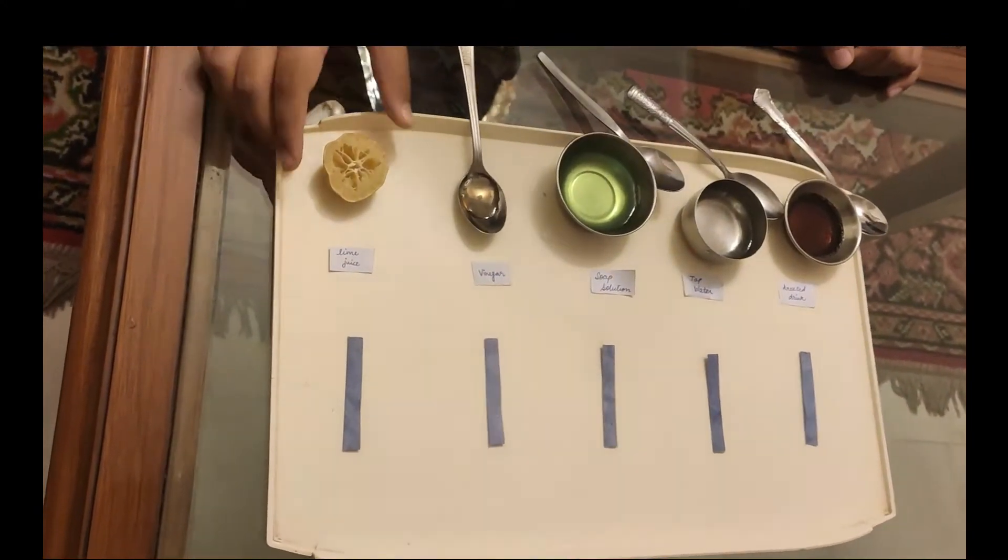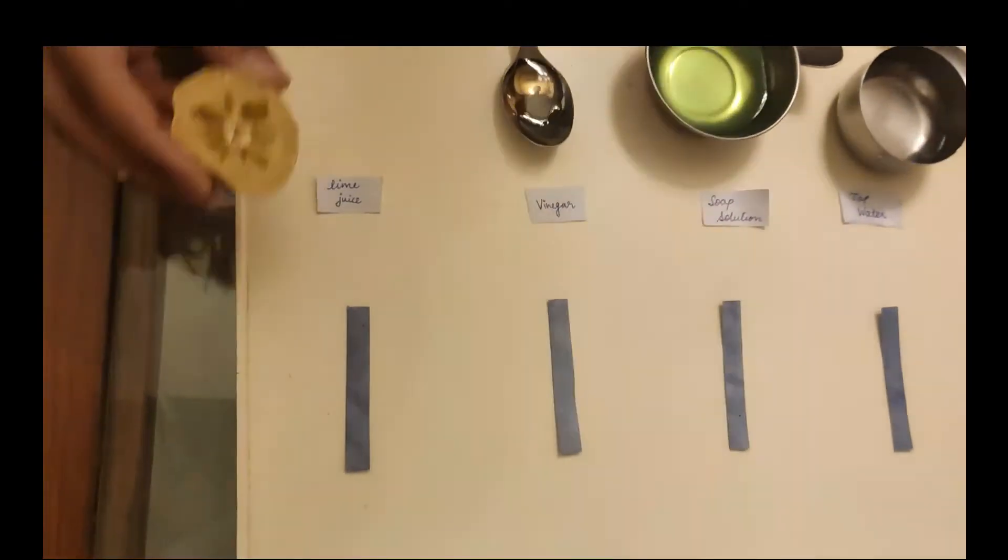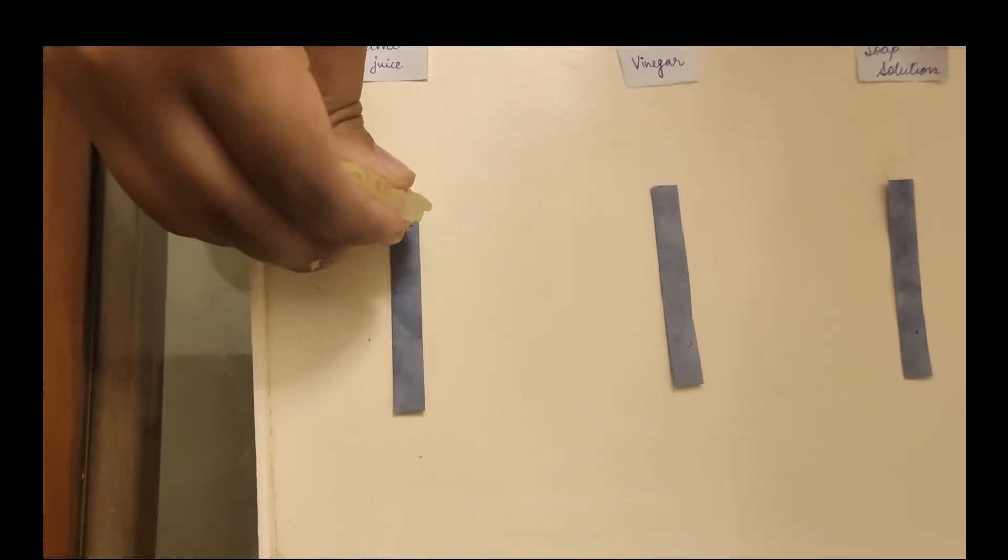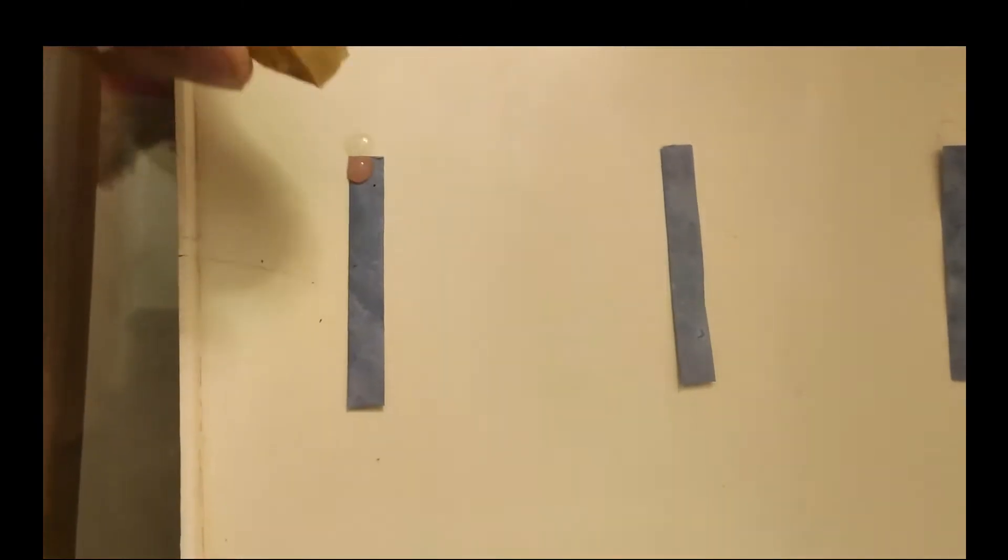First, we have the lemon juice. If I spray a little bit, as we can see, the litmus paper has turned red.